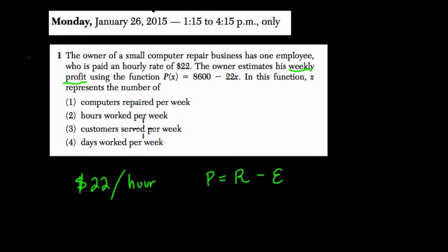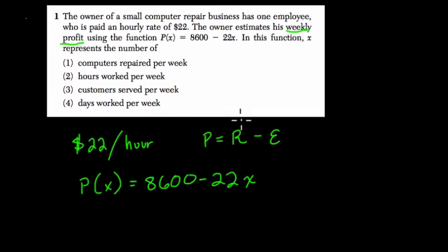So here, P of X, P for profit, X is probably going to be the hours we're working, equals 8,600 minus 22X. In this function, what does X represent? Let's do this logically for a moment. We're looking at the profit that the owner is making. This is the owner's profit.